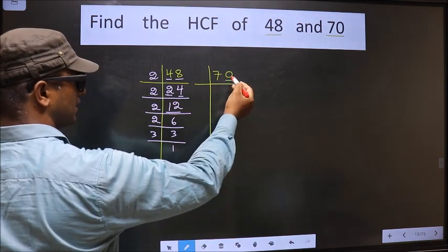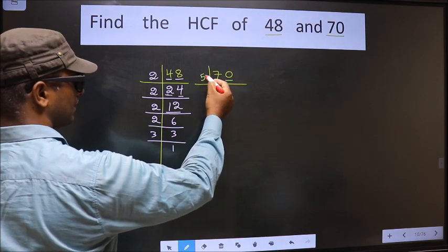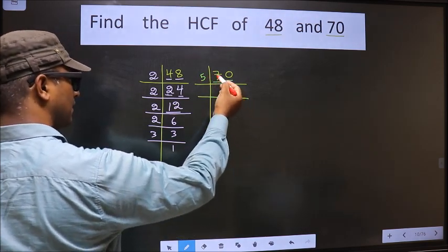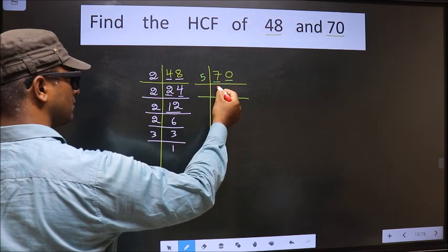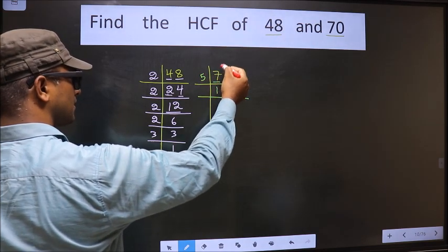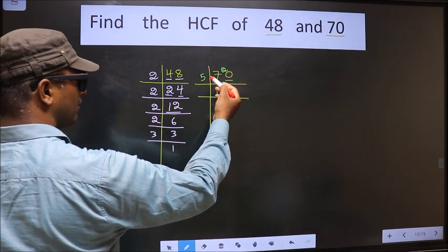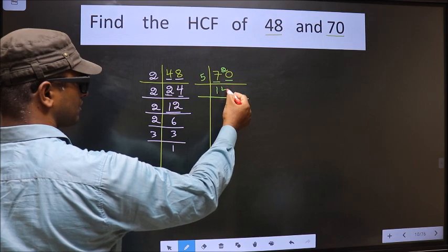For this number, last digit is 0, so we take 5 here. The first number is 7. A number close to 7 in 5 table is 5 times 1 is 5. 7 minus 5 is 2, carried forward making it 20. When do we get 20 in 5 table? 5 times 4 is 20.